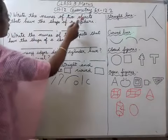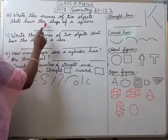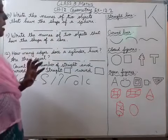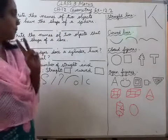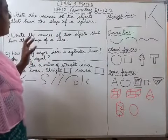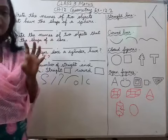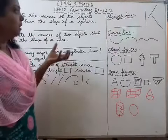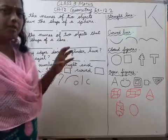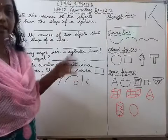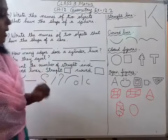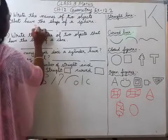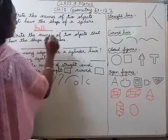Write the names of two objects that have the shape of a sphere. Sphere shape mein kya kya hota hai? Ball hota hai — cricket ball, football — then globe, lemon. You can write any of these. I am going to write ball and globe.